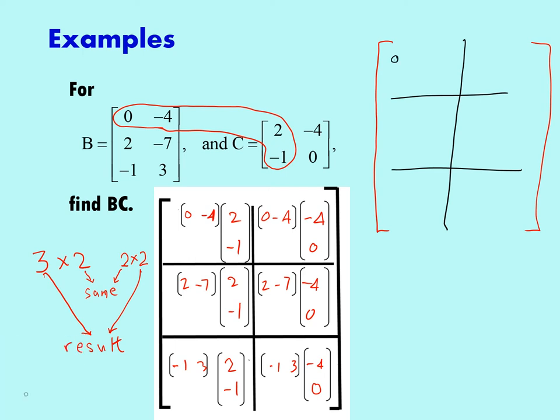In row 1 column 1 we're going to have 0 times 2 plus negative 4 times negative 1, and that's going to end up just being 4. This is going to be 4 plus 7. This is going to be negative 2 plus negative 3. 0 plus 0. Negative 8 plus 0. 4 plus 0.